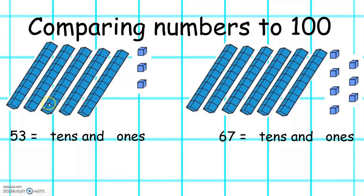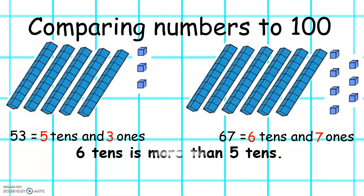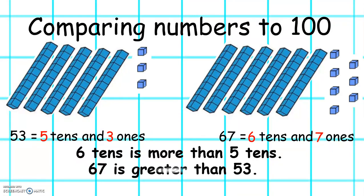How many tens are there in 53? Let's count: 5 tens and 3 ones. And let's count how many tens and ones there are in 67: 6 tens and 7 ones. 6 tens is more than 5 tens, so 67 is greater than 53. And 53 is the least.